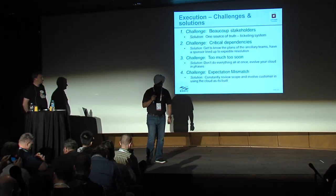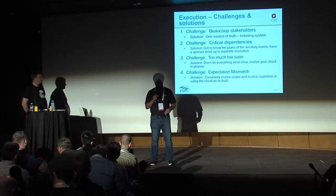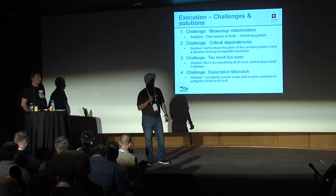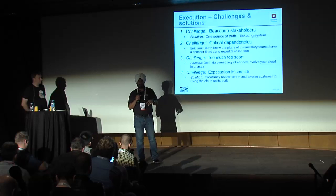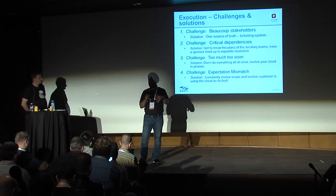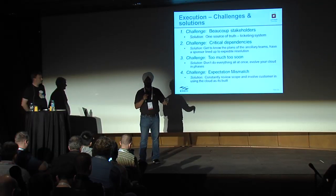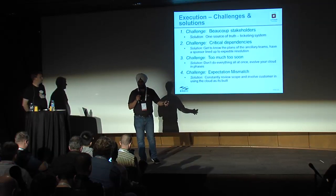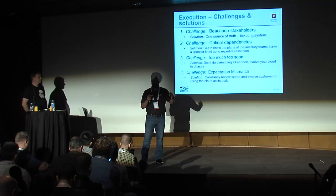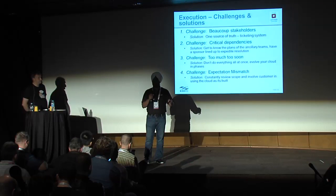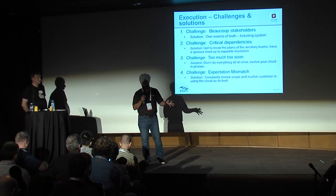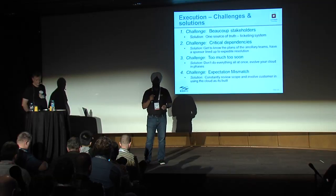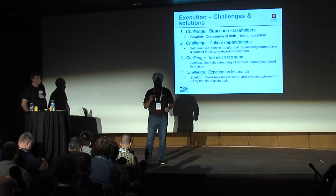For critical dependencies with other teams, you've got to make sure you have a connection with those teams, know their plans, and have a sponsor or champion lined up on your side with a relationship in that team. Otherwise you won't get deployed. If the network engineering team doesn't give you the switches in time or the load balancing team doesn't deliver in time, you can't deploy. It is critical.